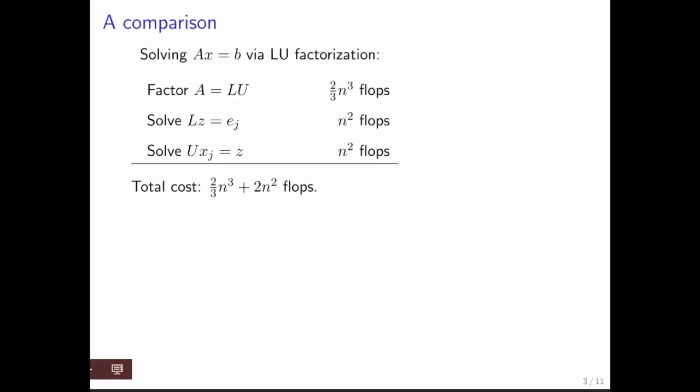And let's look at what it costs to solve AX equals B via LU factorization, or via Gaussian elimination, which we discussed before. Well, you have the factor matrix A. That's two-thirds n-cubed floating point operations. And then you solve a lower triangular system, and you solve an upper triangular system. And therefore, the total cost is given right here: two-thirds n-cubed plus two n-squared.